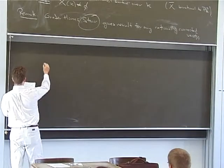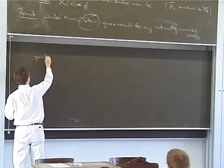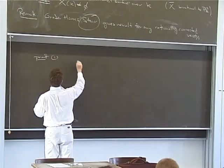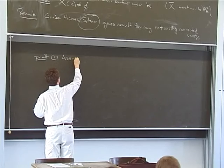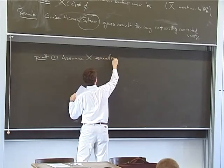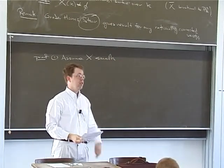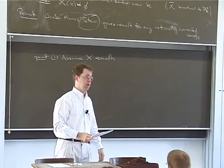So here is the basic approach. So the first thing, so we may assume X is smooth. If I take a resolution of singularities, if the resolution has a rational point, then the original variety has a rational point.